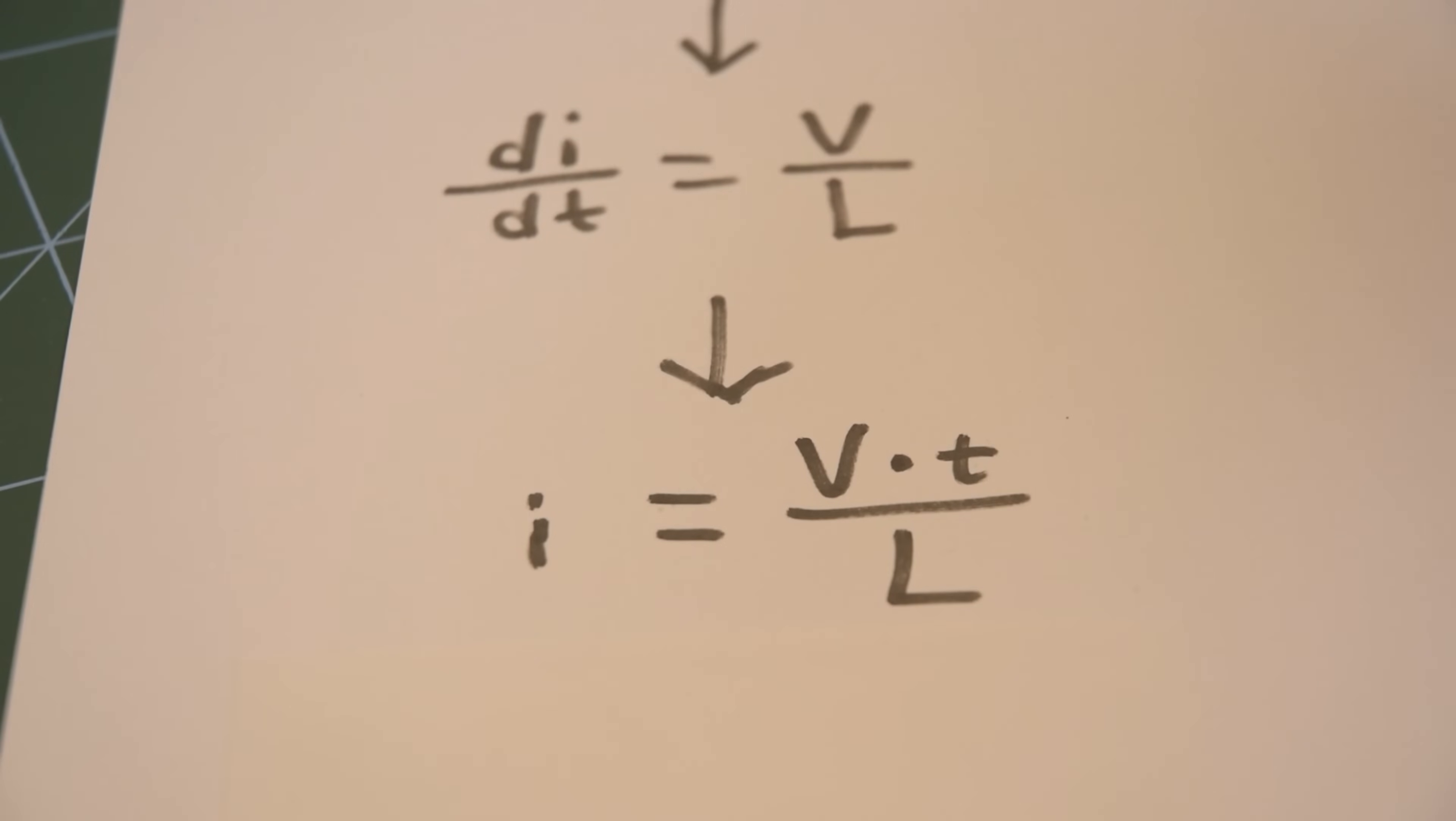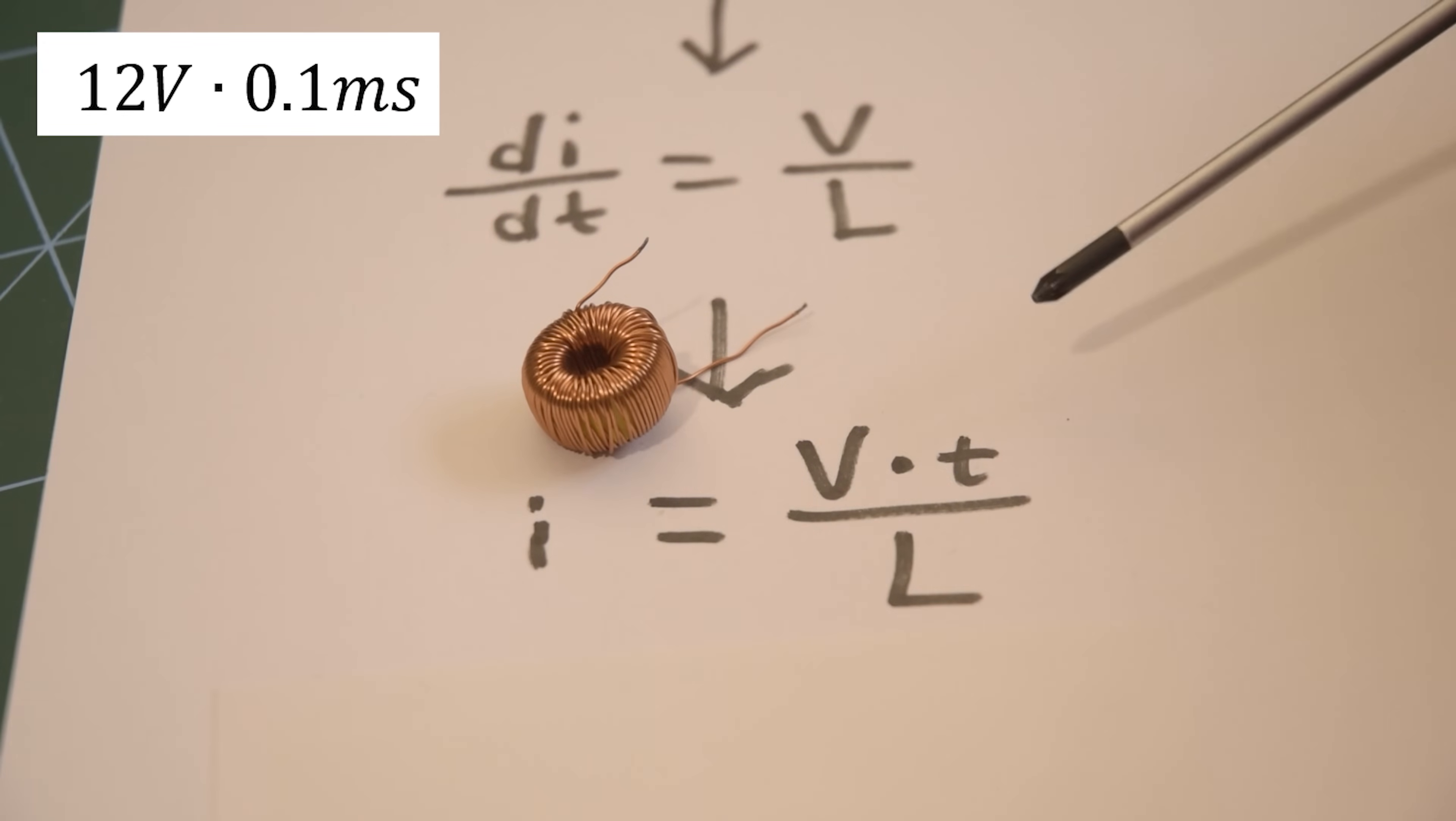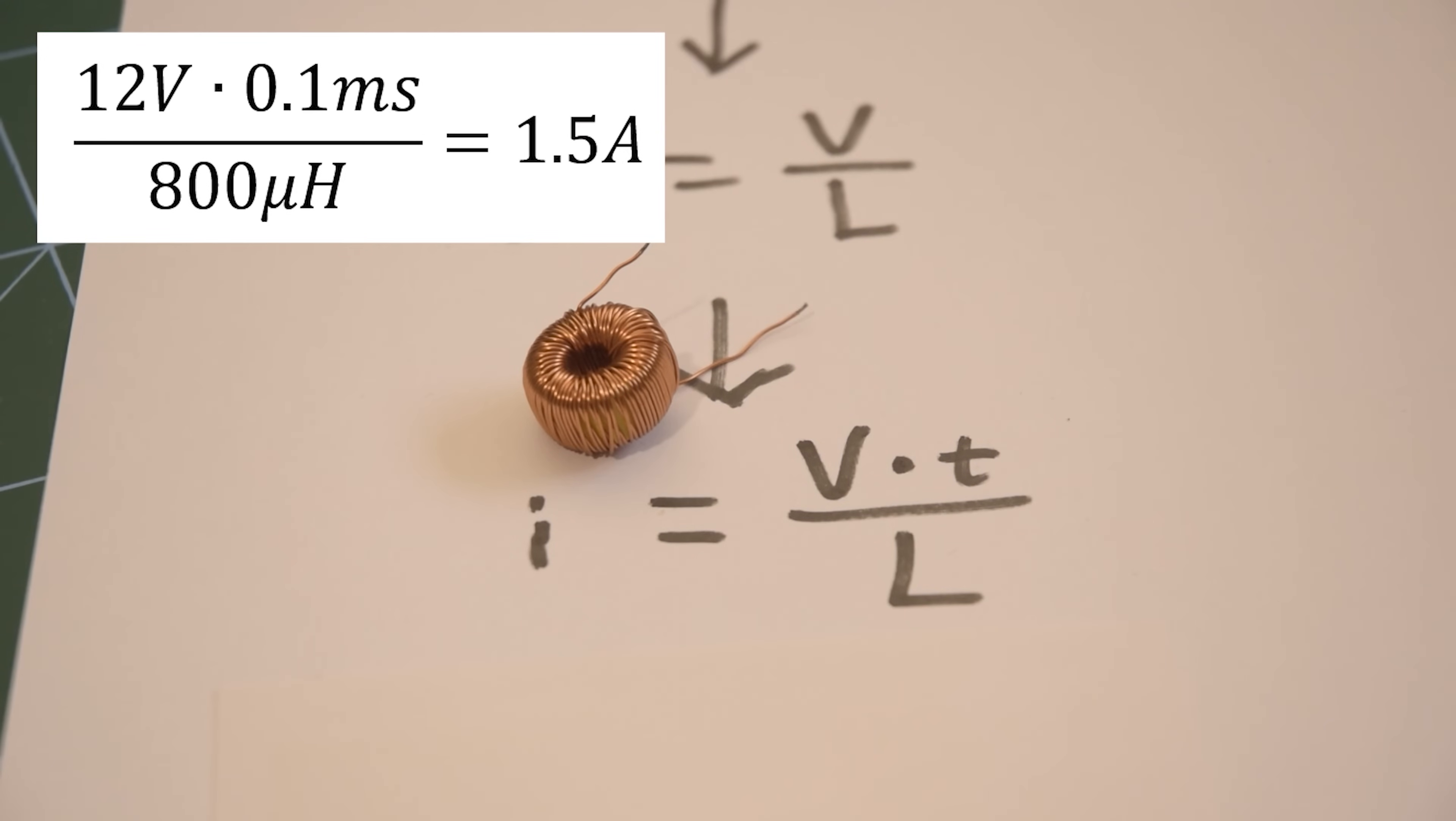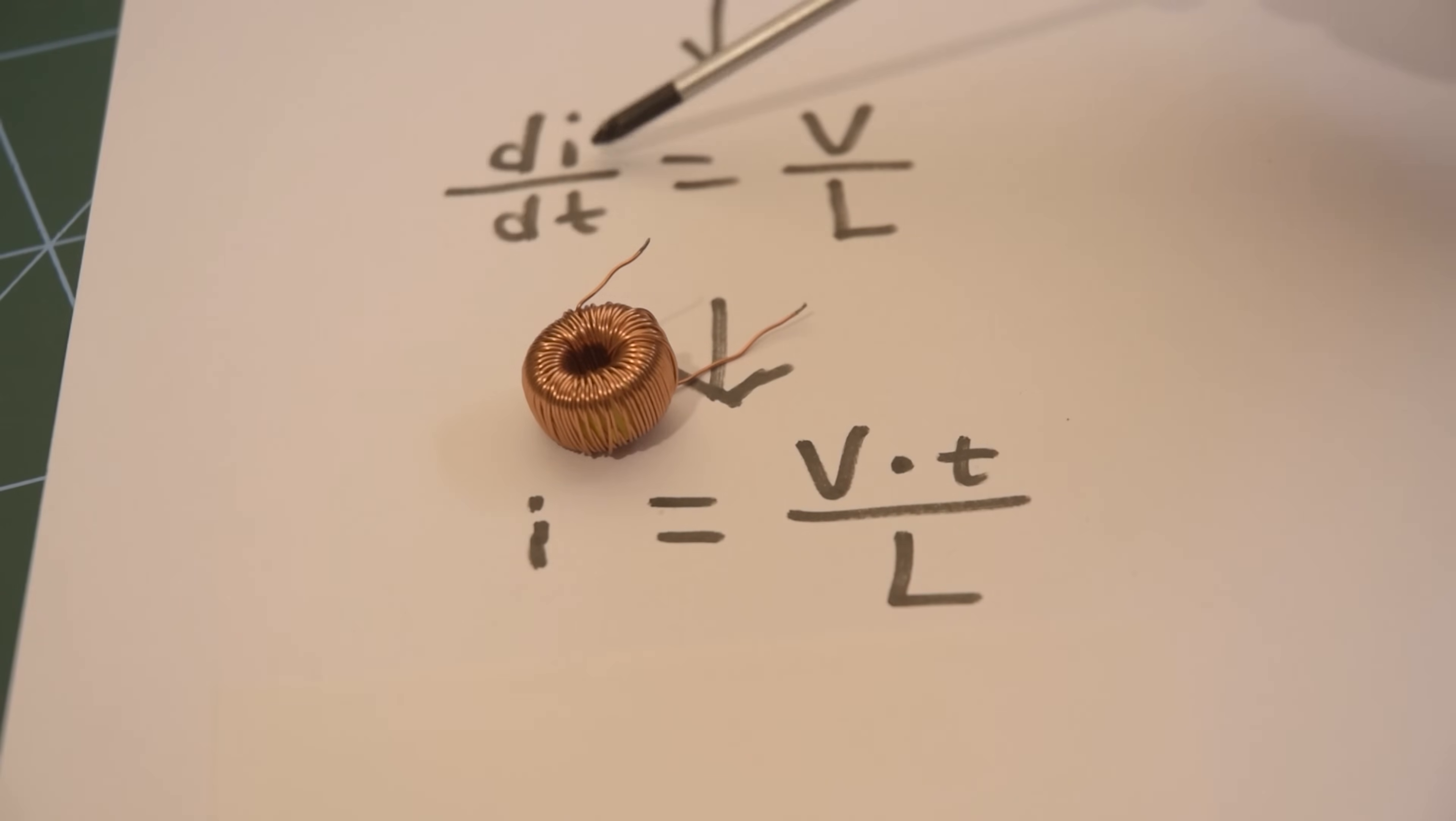That then tells us that the current through our inductor is the voltage we've put across it, multiplied by how long it's been across it, divided by the inductance. So for an example, if I bring back the inductor from earlier, this measures at around 800 microhenry. So if I had a 12 volt input to my circuit, which I can either switch across this or not switch across this, let's say we turn it on for 0.1 milliseconds. That would be 12 volts times 0.1 milliseconds divided by 800 microhenry. And that would give us a current of 1.5 amps.